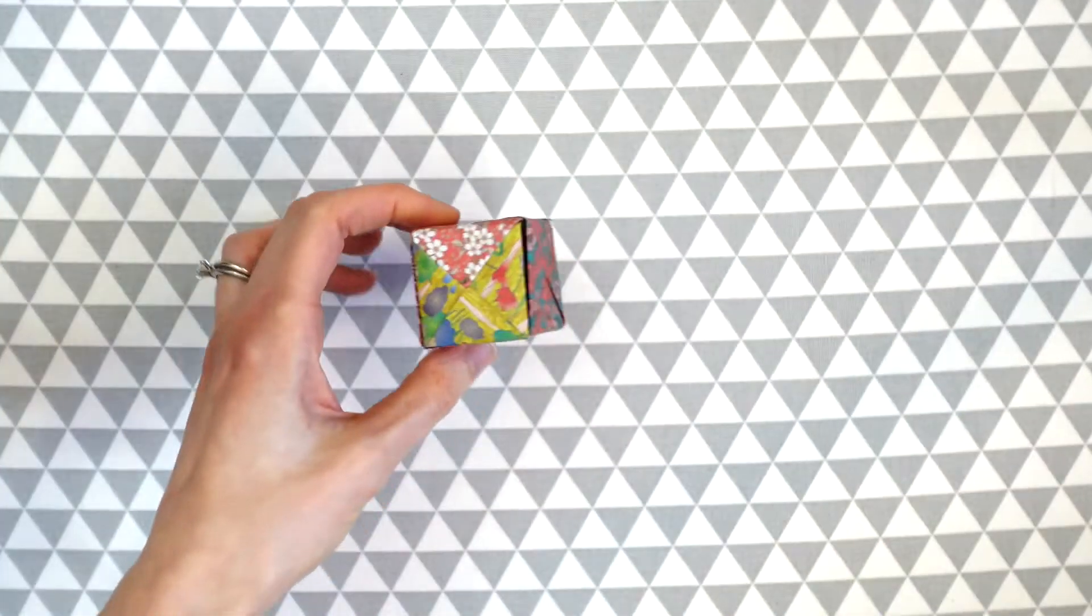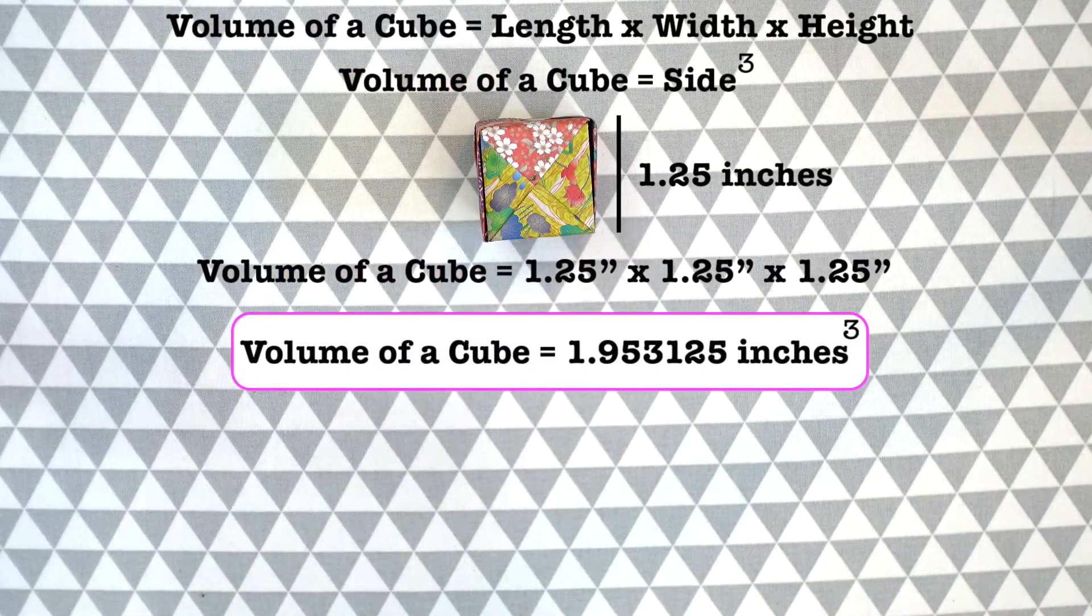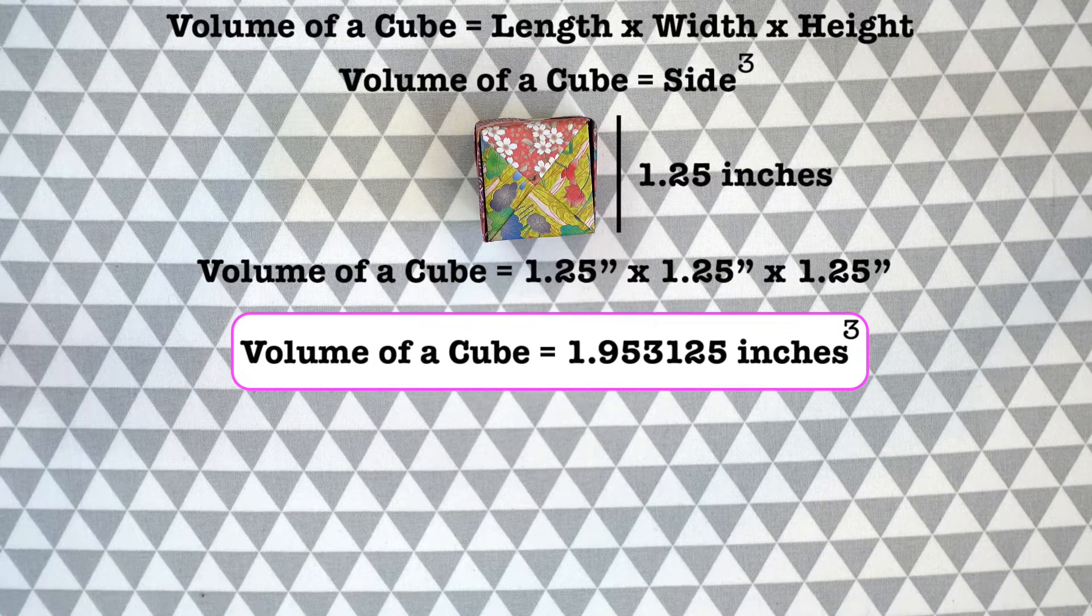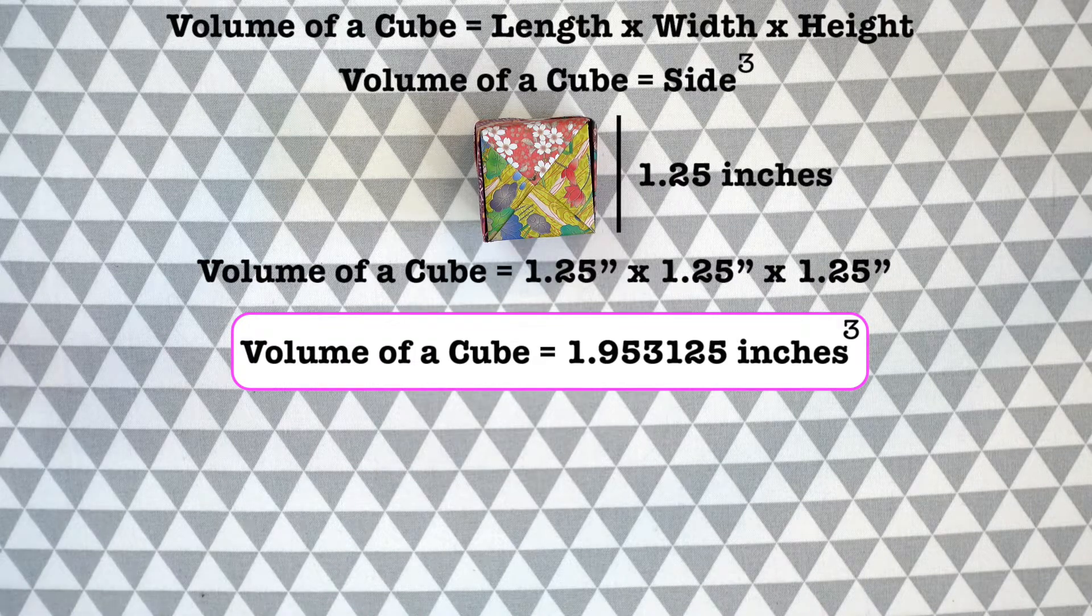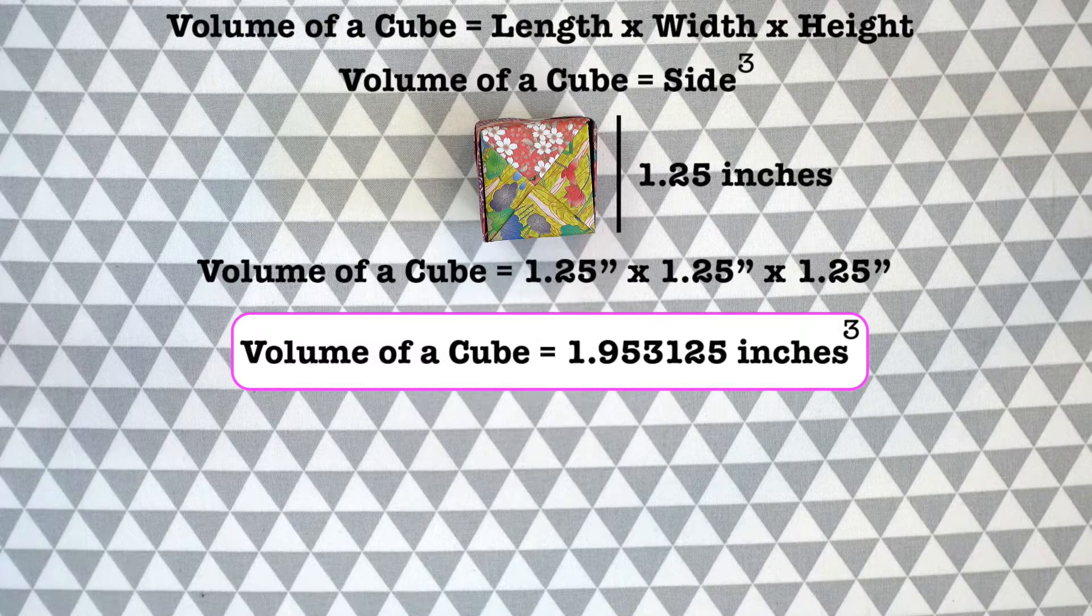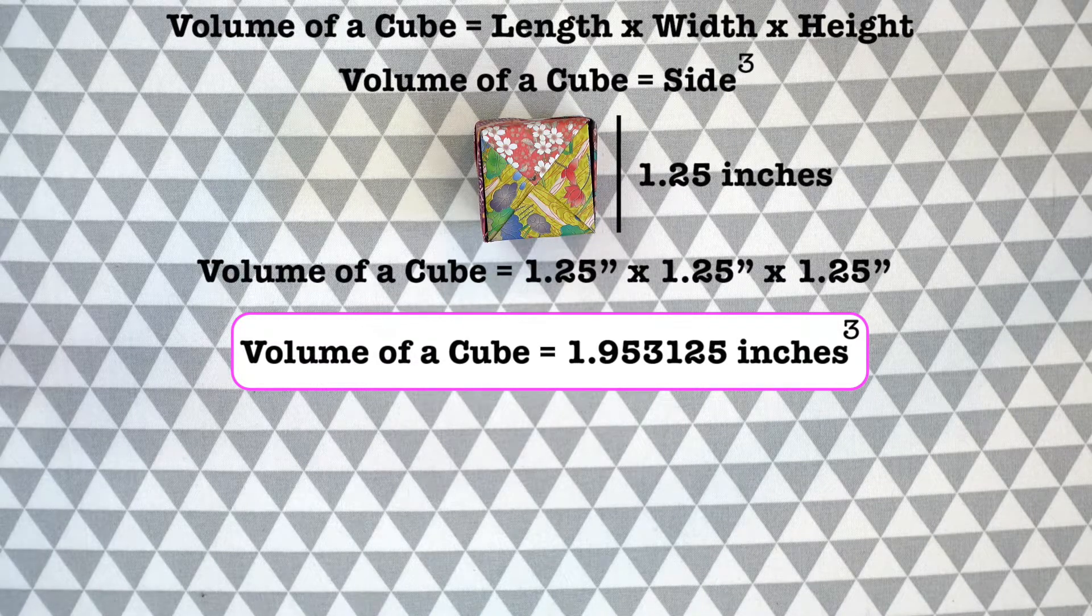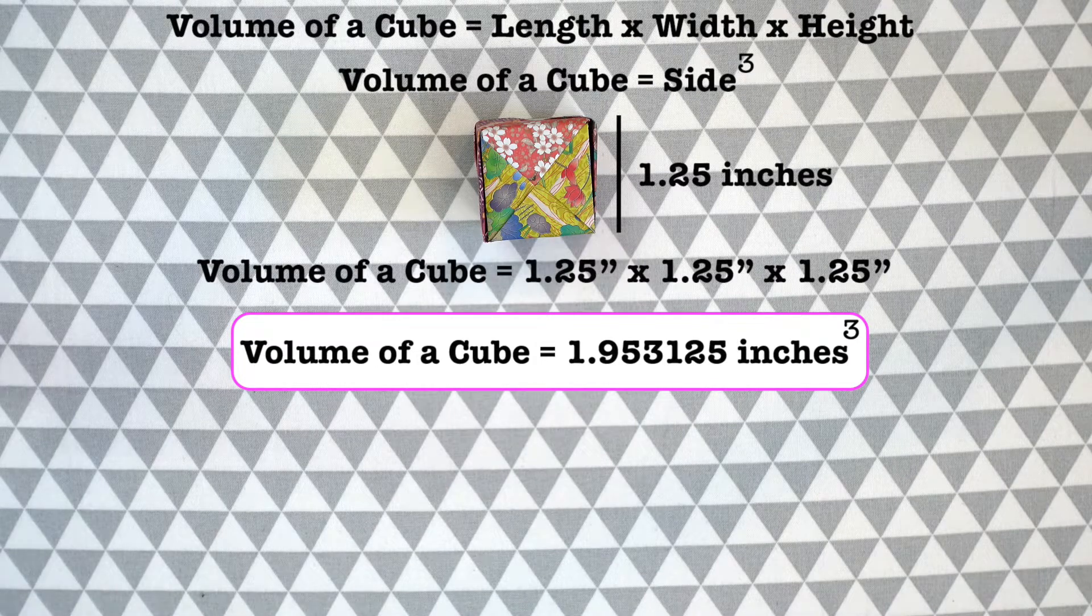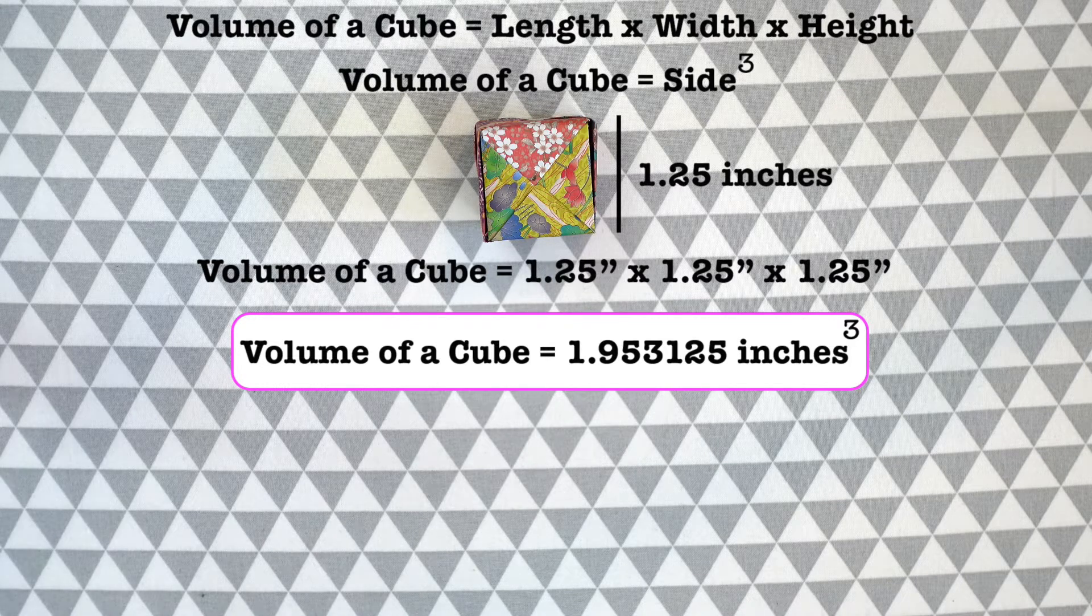If we look here this is about an inch and a quarter. If one side is an inch and a quarter, we can easily find its volume. The volume of a cube is length times width times height, and since it's a cube all three lengths are the same, which is 1.25 inches. So we're multiplying 1.25 times 1.25 times 1.25, or 1.25 cubed. When you calculate that out we get 1.953125 inches cubed.